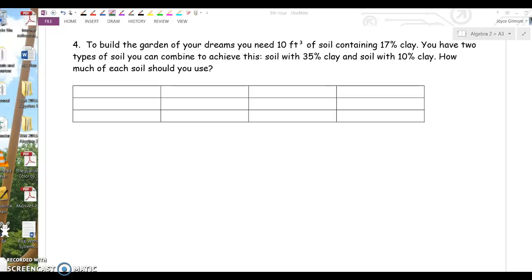Any idea what we should use for X and Y? X is going to be a type of soil, amount of a type of soil. So I'm going to say amount of 35% soil, and Y is going to be the amount of 10% soil.